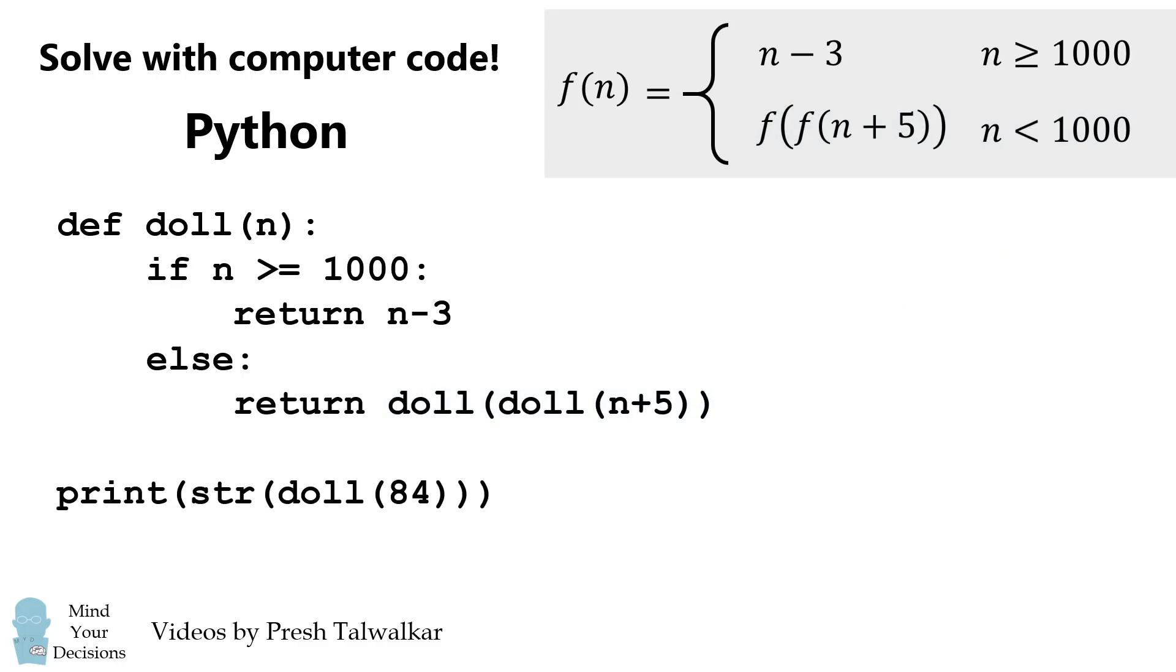Now, you just type in this code, and then type in print the value of doll of 84. And you'll get the answer of 997 instantly. It's amazing that Python can solve this problem so quickly, and all you need to do is type in the definition of the function. So this is a great problem from a 1984 test, and the problem can illustrate the power of computer code.